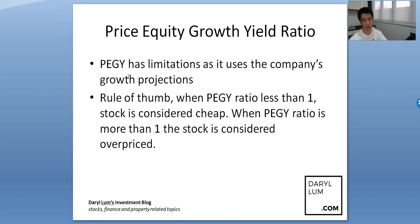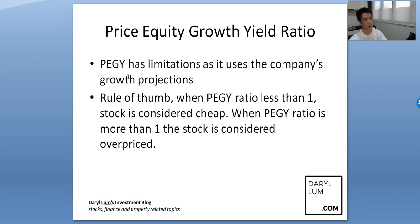The PEGY has limitations, just like the previous few metrics. Every metric has a limitation. The PEGY limitation is that it uses the company's future growth projections — what the director or the company puts out in its annual reports about future growth projections. A lot of things can happen; for example, currently we have the COVID-19 situation, and all the projections for the last quarter in the US stock market have gone completely out of whack.